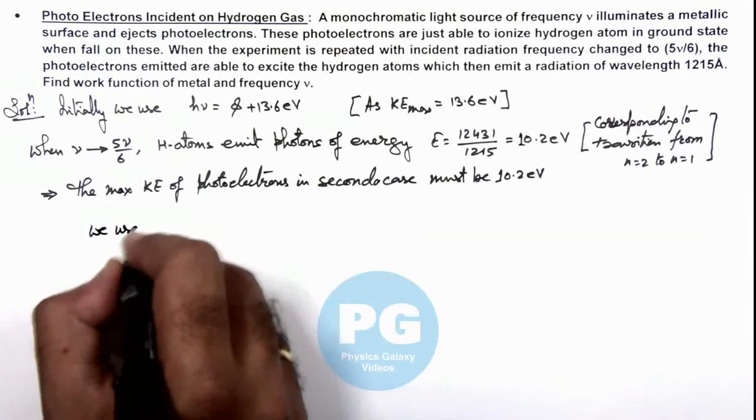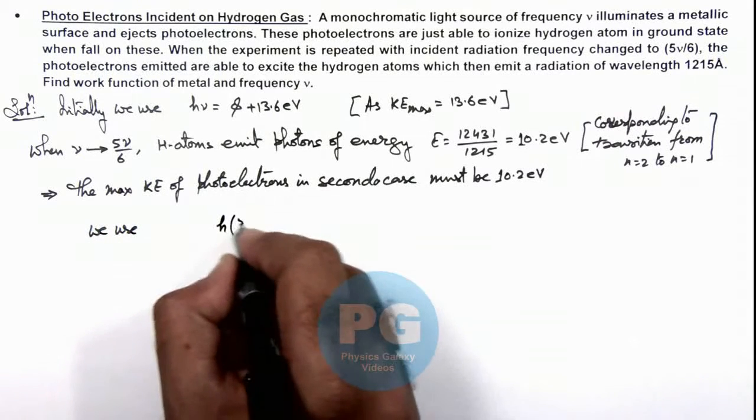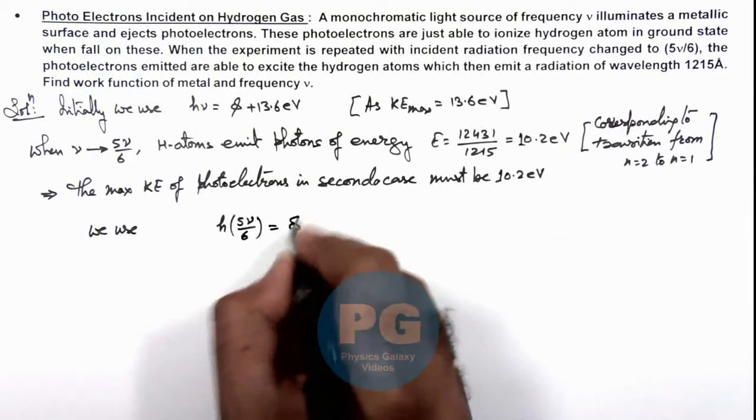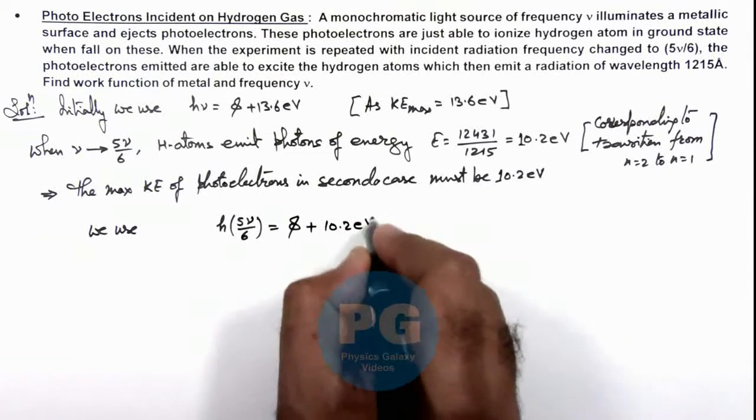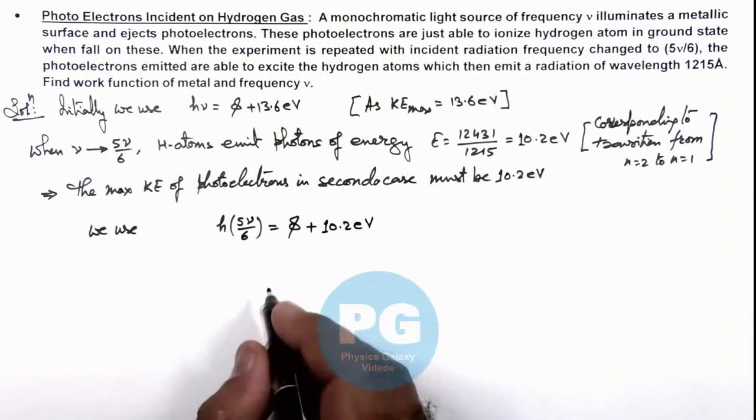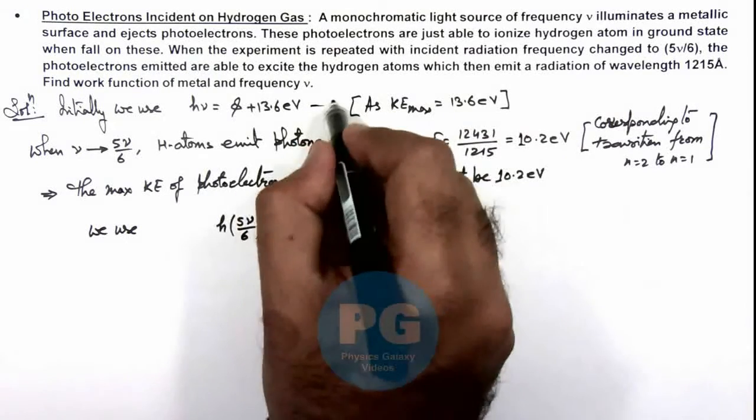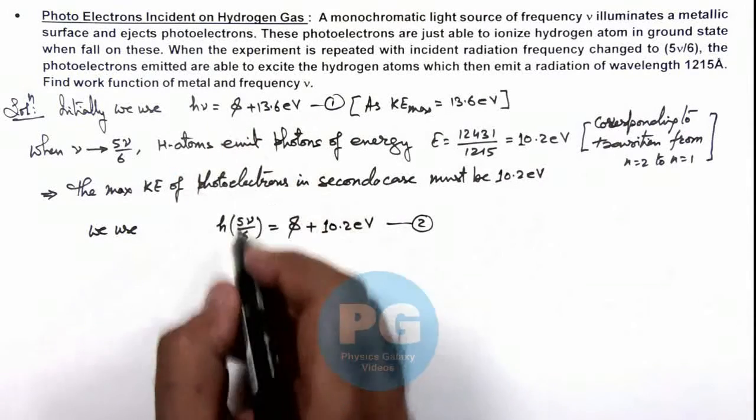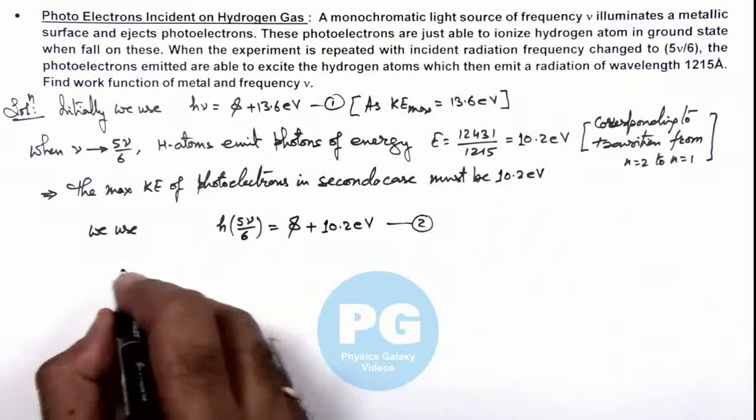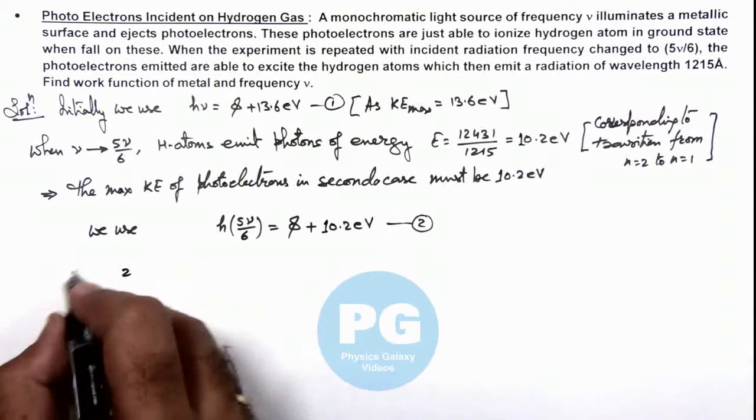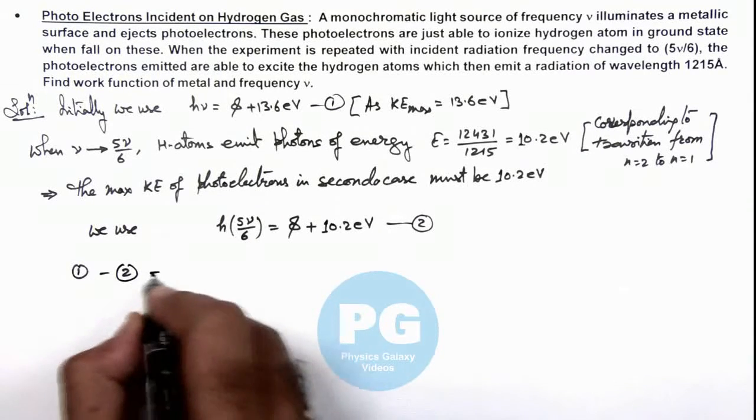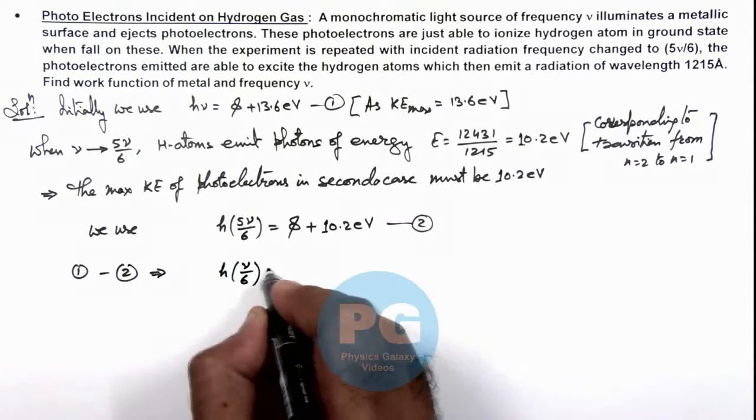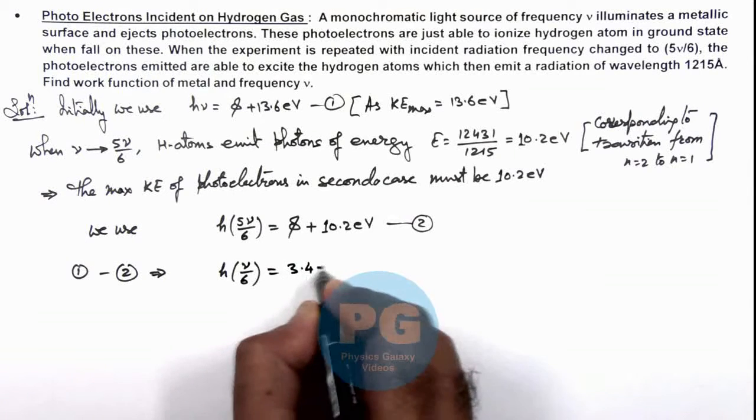This implies here we use h multiplied by φν/6, that is equal to φ plus 10.2 electron volts. Now in this situation, if we consider this as equation 1 and this is equation 2, then subtracting these two values, if we use 1 minus 2, this implies h multiplied by ν/6 is equal to 3.4 electron volts.